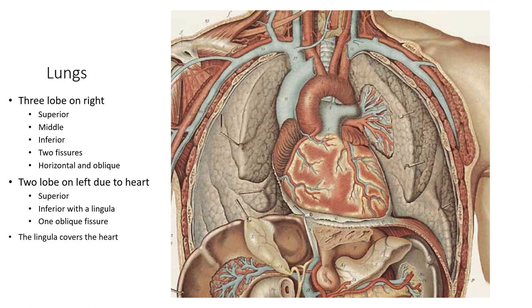On the lungs you can see a fissure going this way and another fissure going across, so we can talk about the superior, middle, and inferior lobes. You can also talk about the horizontal fissure and the oblique fissure on the right side. On the left side there is only the oblique fissure, due to the heart. There is an area where the heart is called the cardiac notch, and there is an area of the superior lobe of the left side which wraps around the heart looking almost like a tongue, which we call the lingula.